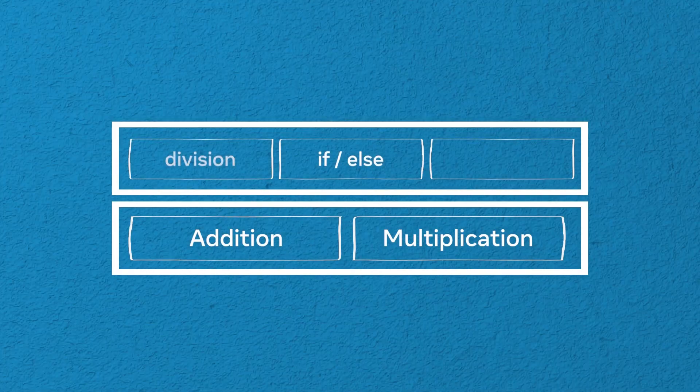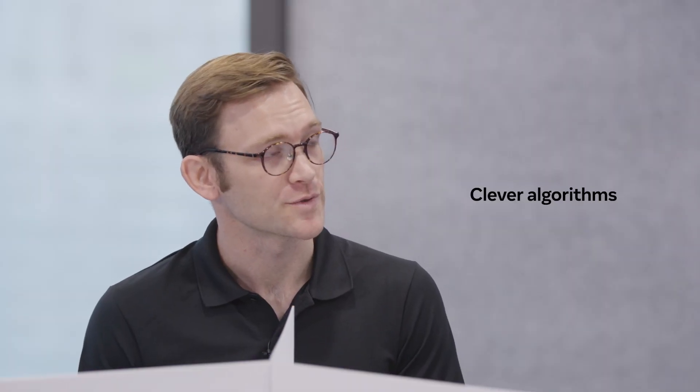Wow, you did it. You actually multiplied our numbers without even knowing them. That's right. And that's how you do multiplication in MPC. Addition and multiplication are great, but how about more complex functions like if-else clauses, or division, or sorting? For those, we have to use clever algorithms or numerical approximations to break them down into a whole bunch of separate additions and multiplications.